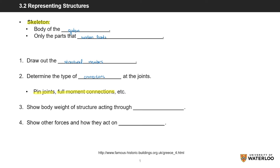Third, assume that the body weight of the structural member only acts through the center of mass. Lastly, show how the forces from different members act on each other with arrows.